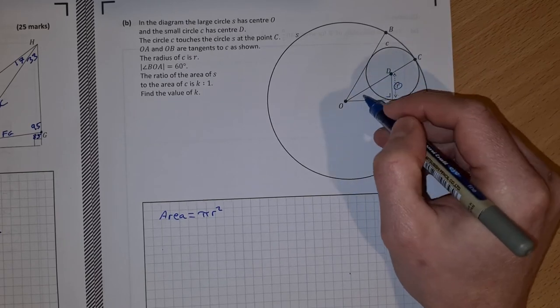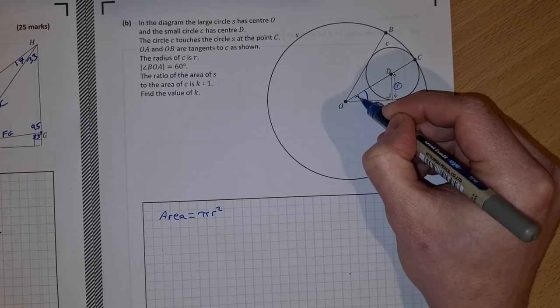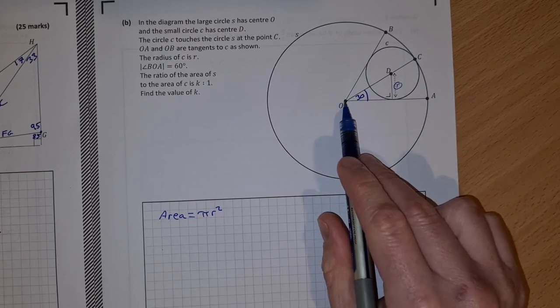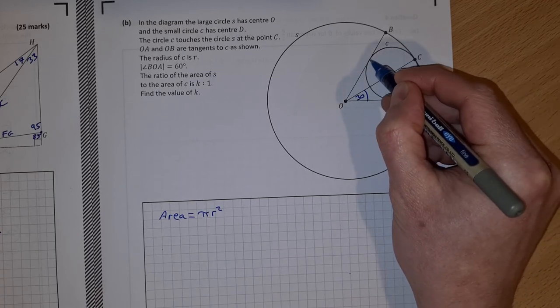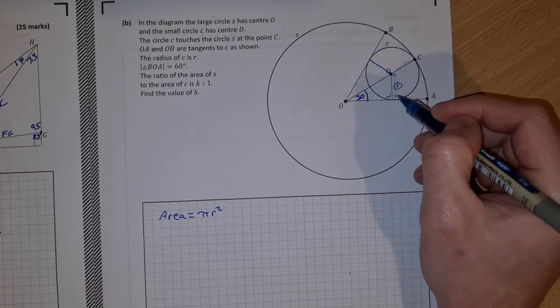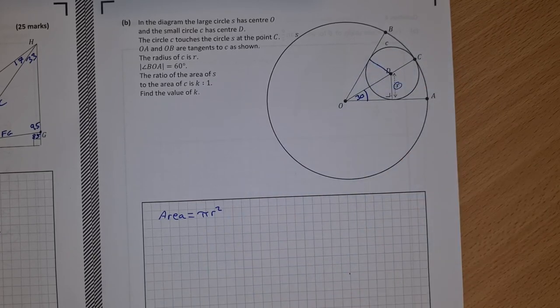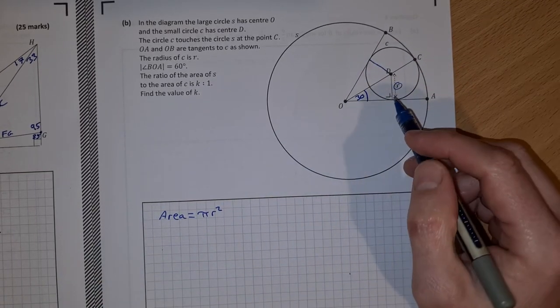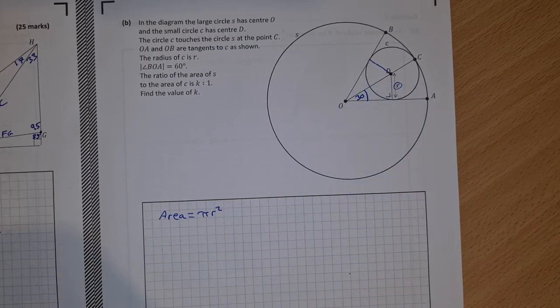Now what I can do here is if this angle here is 60, I know that this angle here is 30 degrees because these are both tangents. I can use similar triangles by drawing a radius here. I have r, I have r, I have a right angle, I have a right angle, and I have a common side, so that means they're congruent triangles. So then that means this angle here, 60, is divided in half to give me 30.